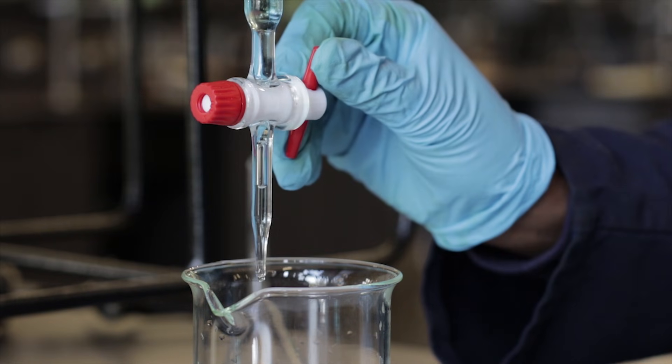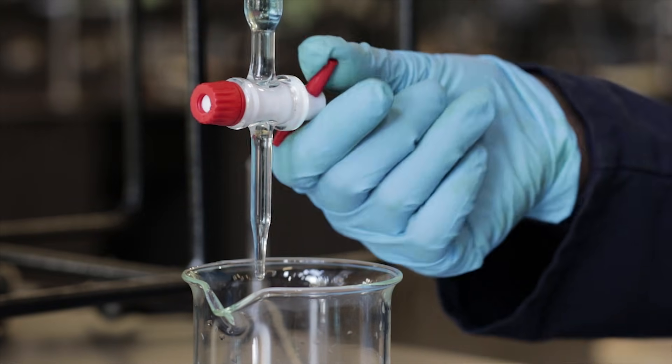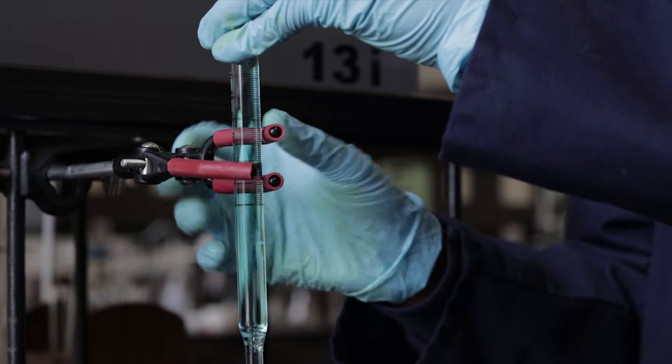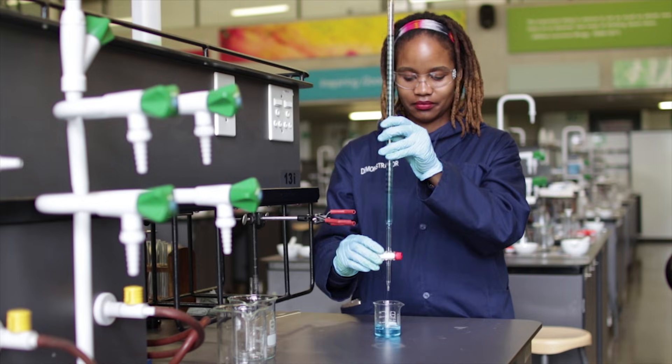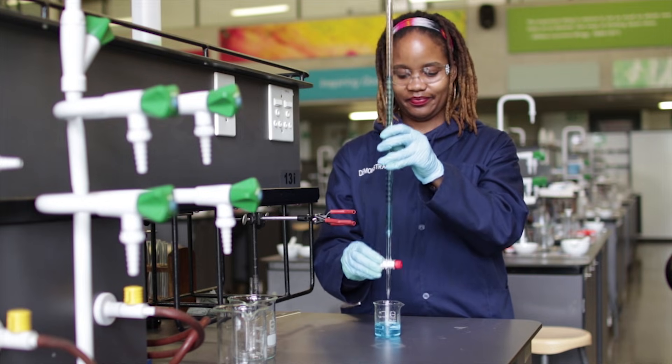The second method is to tap on the side of the burette tip while the solution is flowing. The third and final method is by taking the burette off the stand and shaking it up and down slightly while the solution is flowing making sure no solution is spilled.